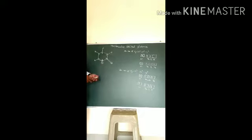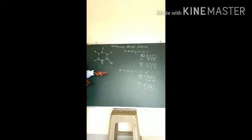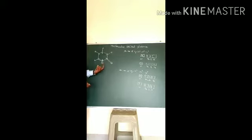Now let me see the molecular orbital picture of pyridine. It is a planar molecule as well and exhibits aromatic properties. How is that? Let me explain the molecular orbital picture of pyridine.